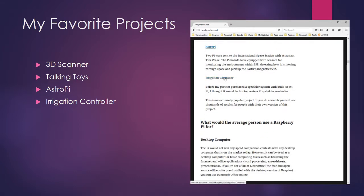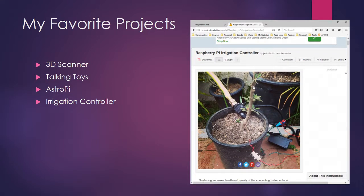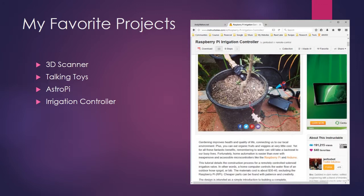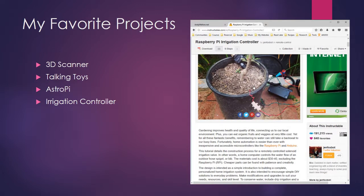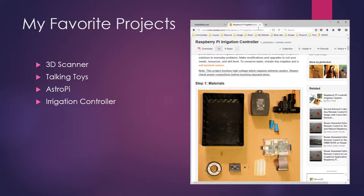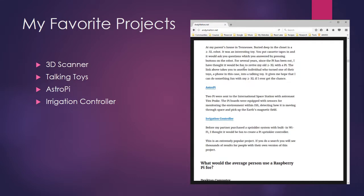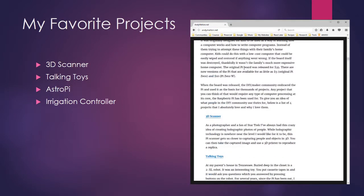The last one is about irrigation controllers. This was one of the better articles I thought — there are hundreds of these out there, but I thought this one was pretty good if you're interested in making an irrigation controller with a Raspberry Pi. Again, there are thousands of Raspberry Pi projects out there, but just to get you interested, I linked out to four of my favorites on my website.